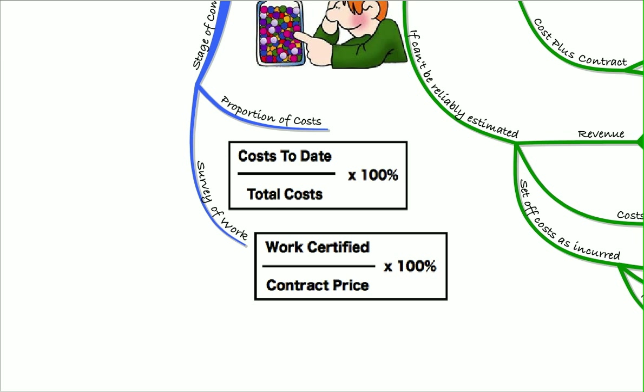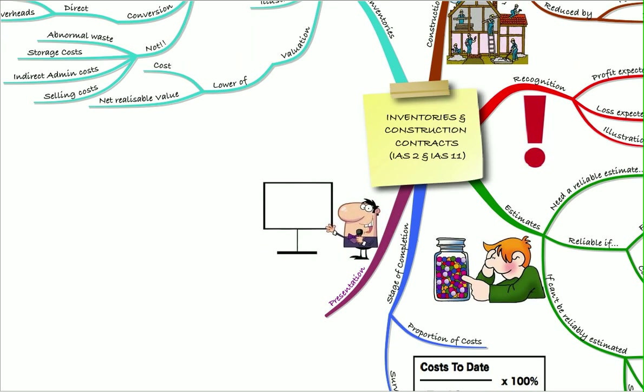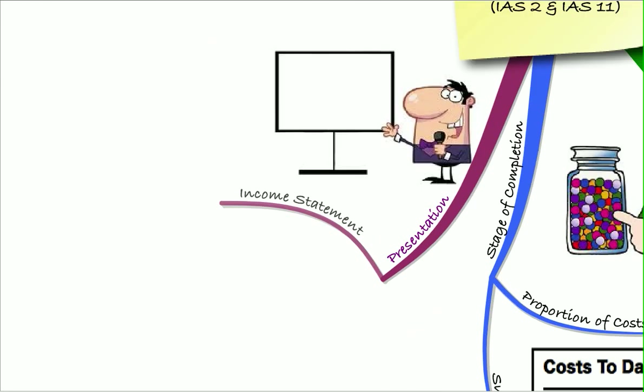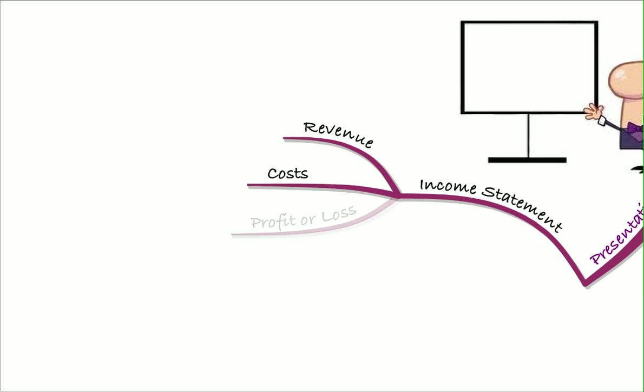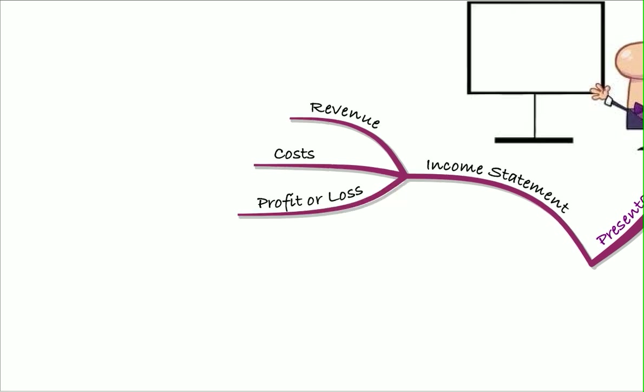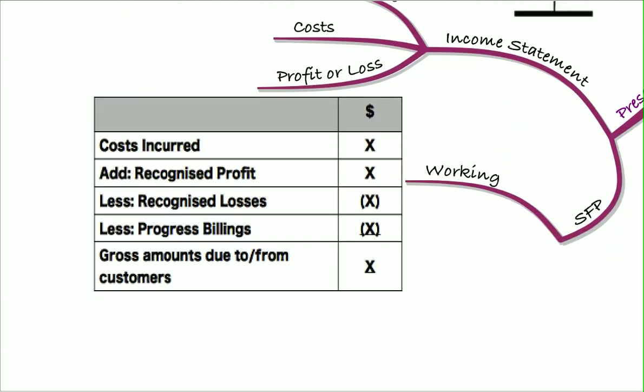So when it comes to presentation of this, in the income statement, we'll show our revenue, we'll show our costs and we'll show the profit or loss on the contract. And in our statement of financial position, we need to do a working. So this is the working you need to learn. You need to be able to do it.